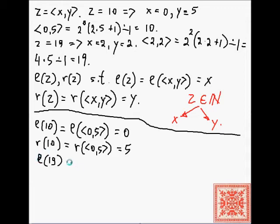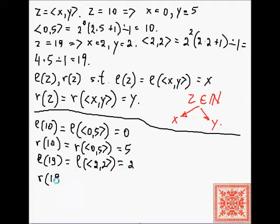And the left part of 19 is the left of the pair (2, 2), which equals 2, and the right of 19 is the right of the pair (2, 2), which also equals 2.